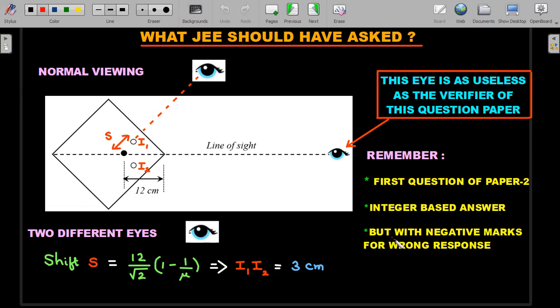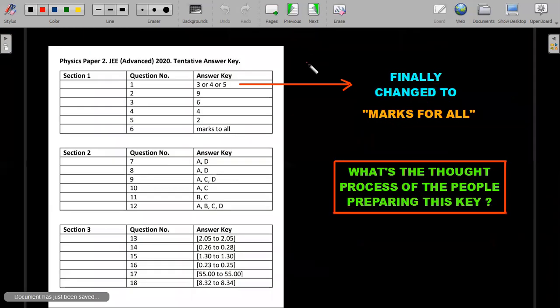One very important lesson that both JEE and students have to learn: if there's a key that's given like this, this was the actual printout of the tentative key. They gave the first question as three or four or five, and finally it was changed to marks for all, which is a bonus.